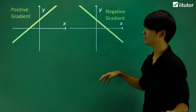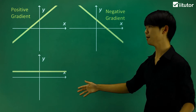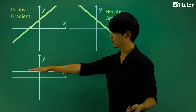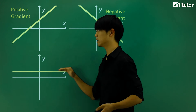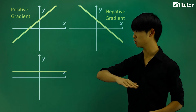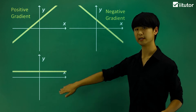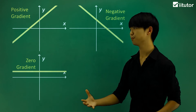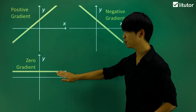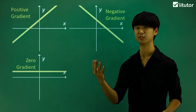So those are the two different types of gradients. Now I'm going to introduce a third type. What if we have a horizontal line — a straight line that goes really horizontal? The gradient for this line is 0. So the value of the gradient for this line is simply 0.